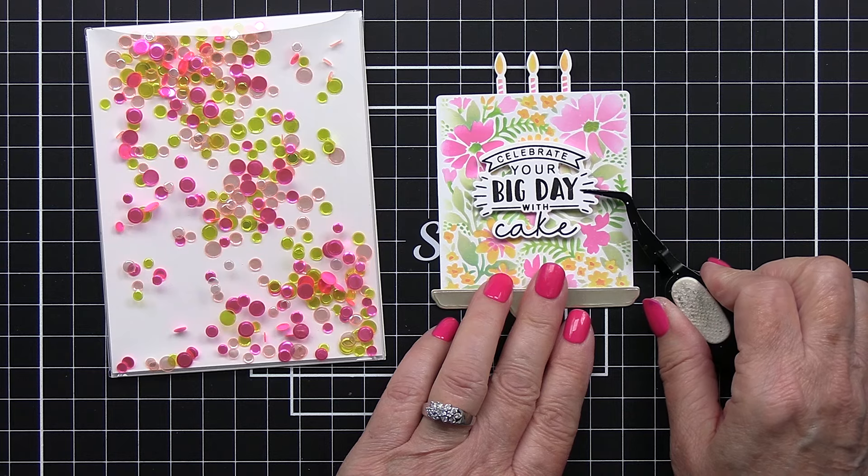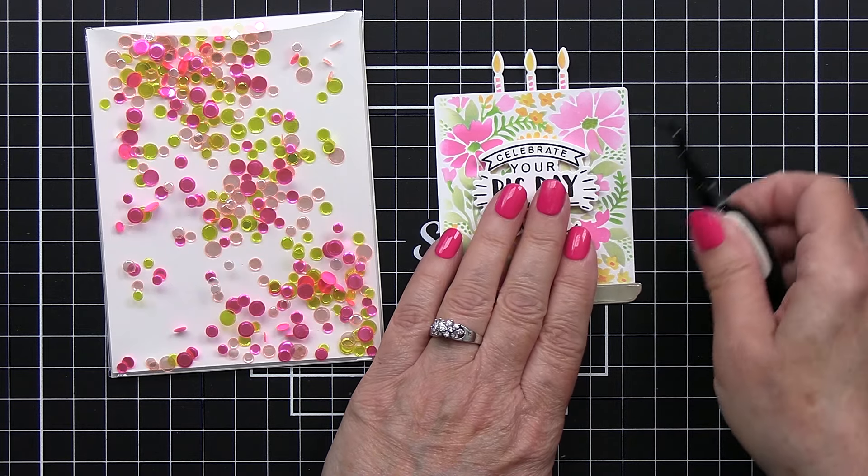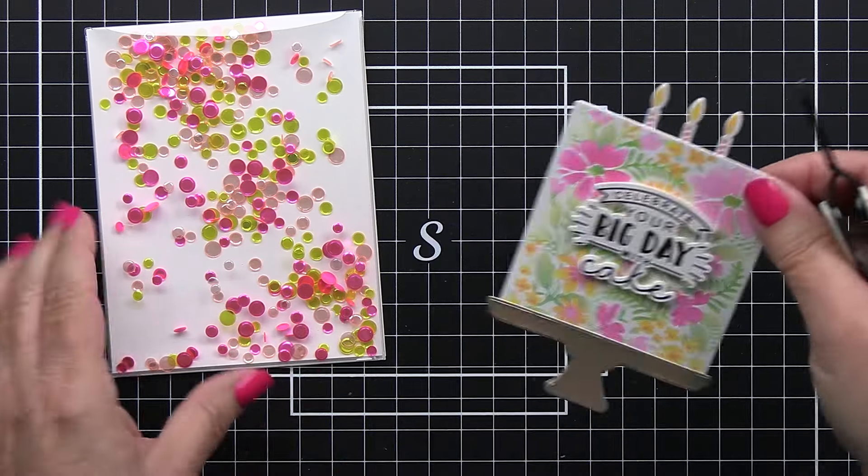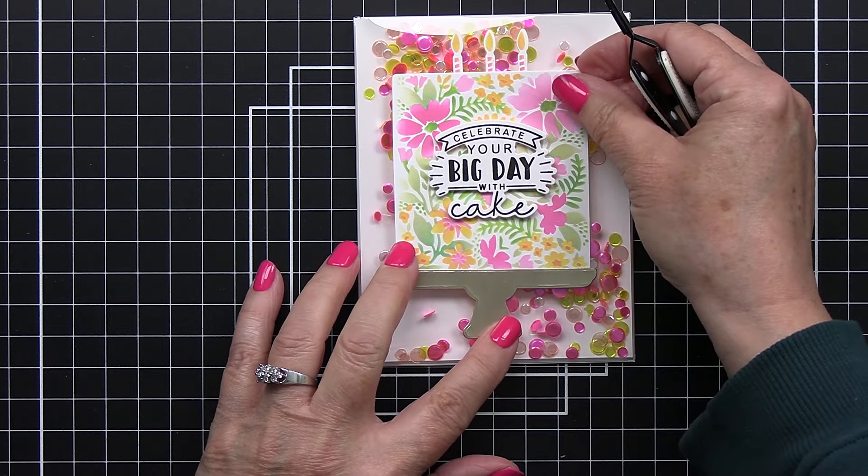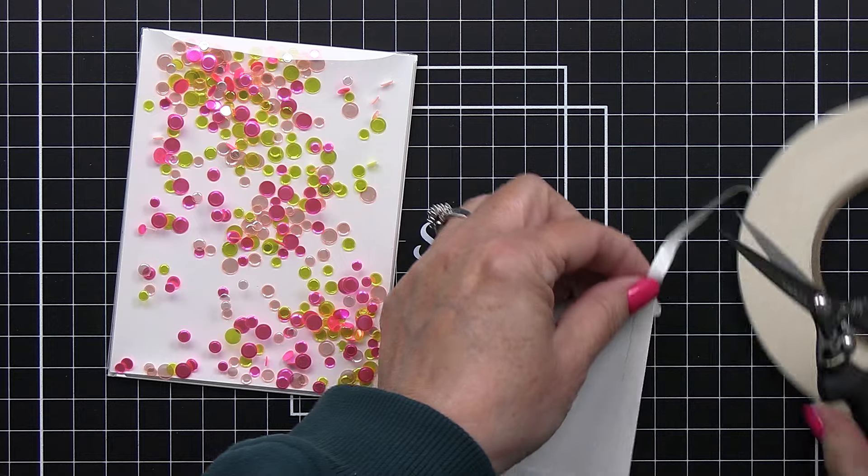So that is going to be my greeting for the front of my card which has been stamped and die cut using some black ink and I'm just going to use my Honey Bee tweezers to pop that onto my cake with some foam adhesive and then I'm ready to add this cake to the front of my shaker element.